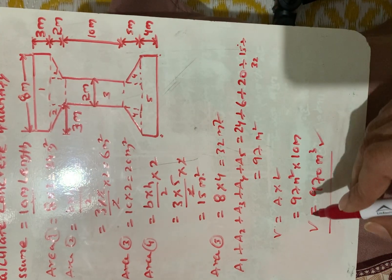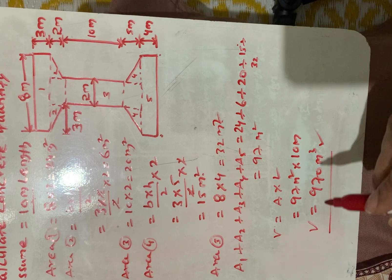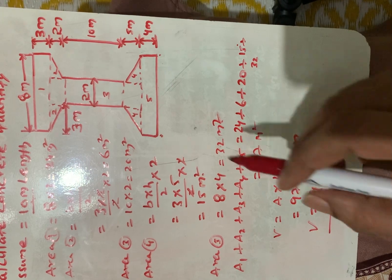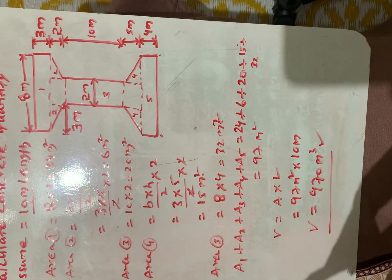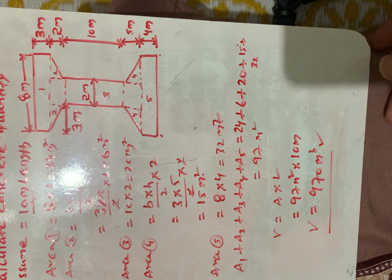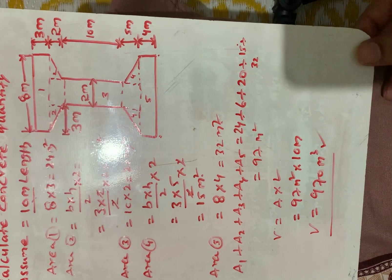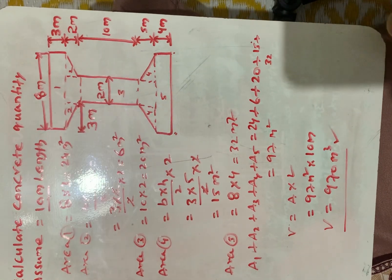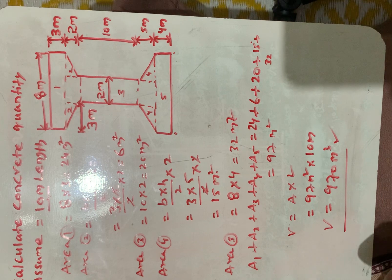So the total concrete quantity for this composite section is 970 cubic meters. This is how you calculate concrete quantity for composite sections. I hope you understood this. If you liked my video, please share, like, and subscribe. Thank you so much for watching.